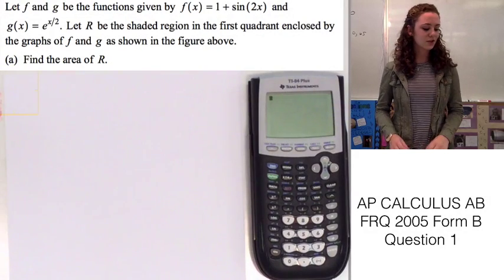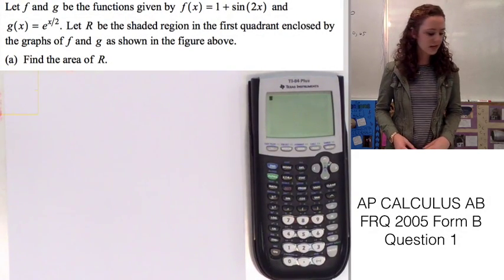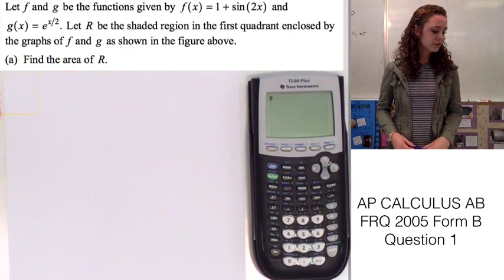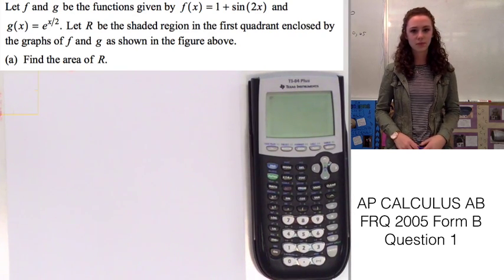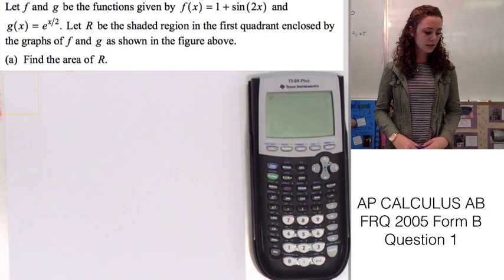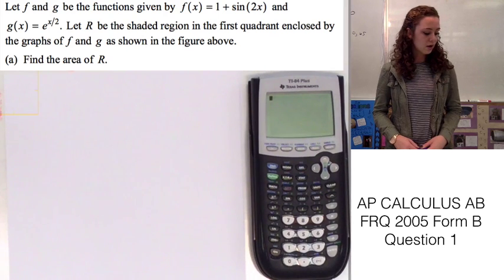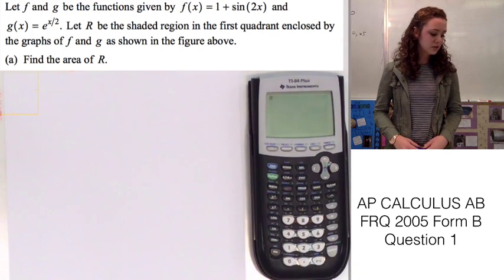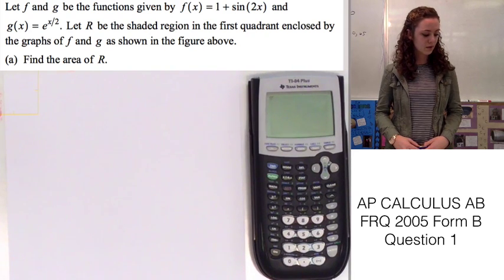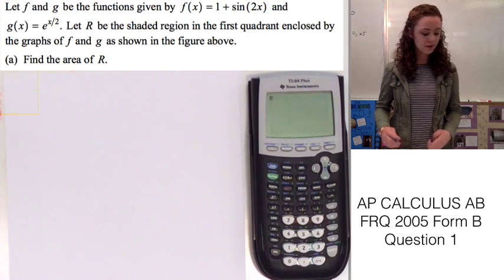I'm going to be doing question one from the 2005 AP Calculus Test. This question says let f and g be the functions given by f of x equals 1 plus sine of 2x, and g of x equals e to the x over 2. Let R be the shaded region in the first quadrant enclosed by the graphs of f and g shown in the figure above. Part A asks us to find the area of R.